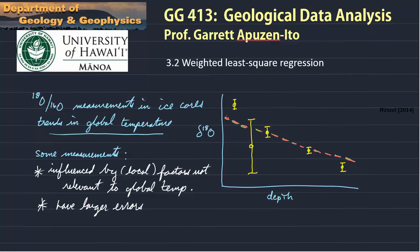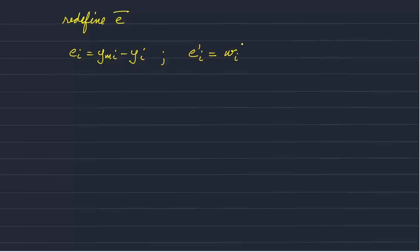And so we have to redefine our error vector. Let's redefine E. So before, E_i was equal to our model value minus our observed value. And we could define a new vector E prime i, where each component of our new vector is E prime i, and that's multiplied by a weighting factor times our residual. And this weighting factor can differ for each measurement.